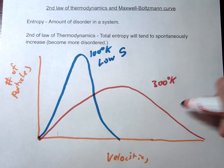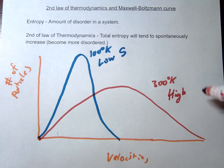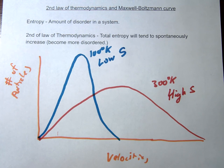So it's going to be a low S, low entropy, and this would be a high entropy relative to each other. So this would be a higher entropy because there's more possible velocities here, right?